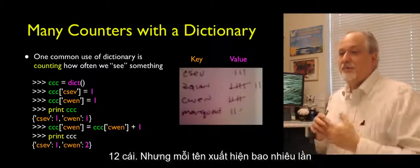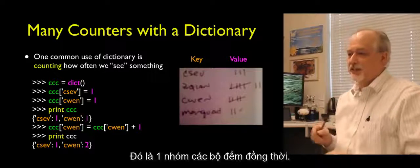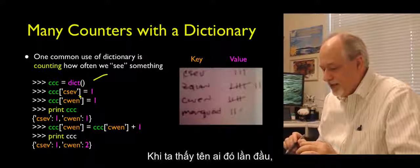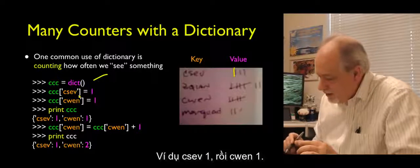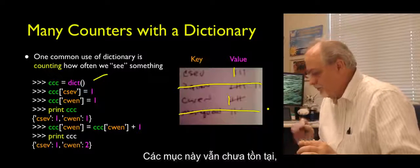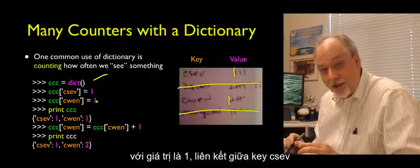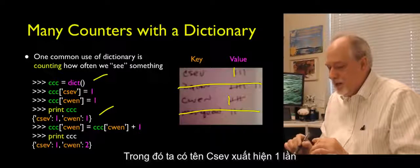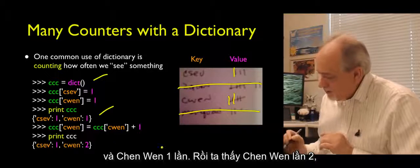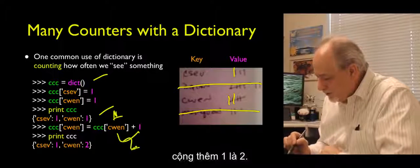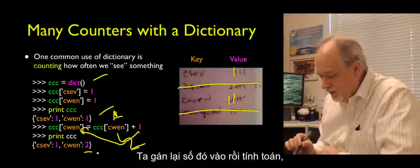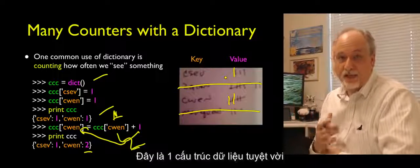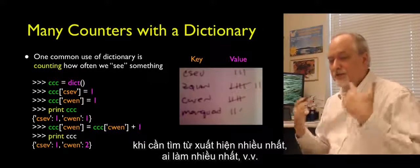How many names did you see total? Maybe 12. But how many of each name did you see is a bunch of simultaneous counters — and a dictionary is great for this. When we see somebody for the first time, we add an entry: Csev gets 1, Chen Wen gets 1. When we see Chen Wen a second time, we take the old value of 1, add 1, get 2, and stick it back in. This is a great data structure for simultaneous counters — like 'what's the most common word?' or 'who had the most commits?'